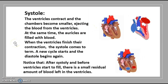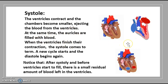Going into more detail about systole: the ventricles contract and the chambers become smaller, as you can see here, and the blood is ejected from the ventricles. At the same time, the atria are filled with blood. When the ventricles finish their contraction, systole comes to a term and a new cycle starts with diastole beginning again. It's important to notice that after systole and before the ventricles start to fill, there is a small residual amount of blood left in the ventricles.